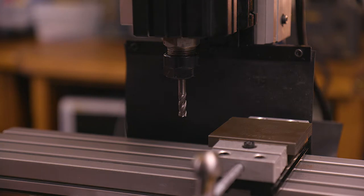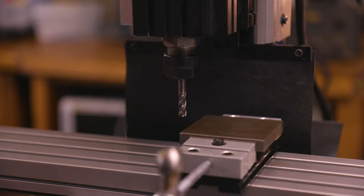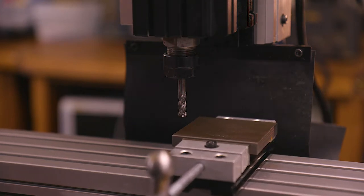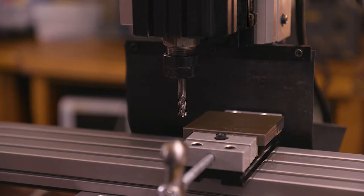Now we're ready to set up the cut. First we clamp the stock material into the vise. Then using the USB gamepad, we move the tool to the zero point on the stock and zero the machine.